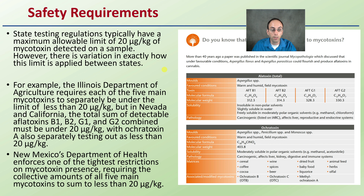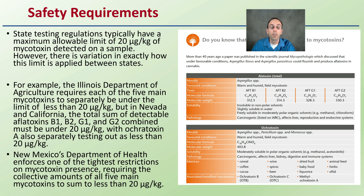Look at your state's regulations. New Mexico's Department of Health enforces one of the tightest restrictions on mycotoxin presence, requiring the collective amounts of all five mycotoxins to sum to less than 20 micrograms per kilogram. It is important to know and understand the regulations, and realize the potential severe implications of the presence of mycotoxins as part of being a well-informed and educated consumer.